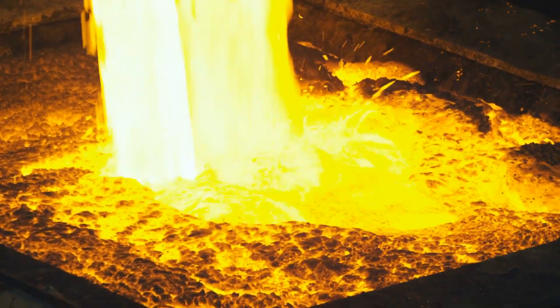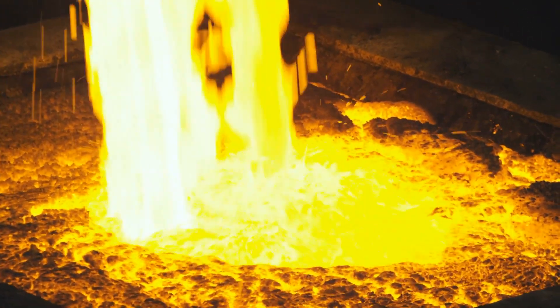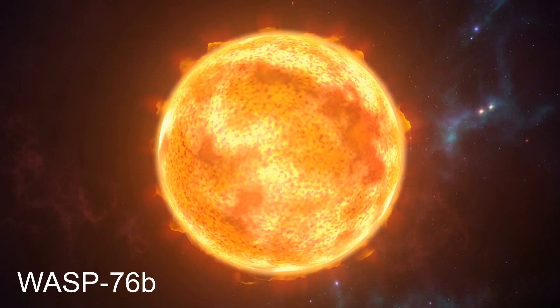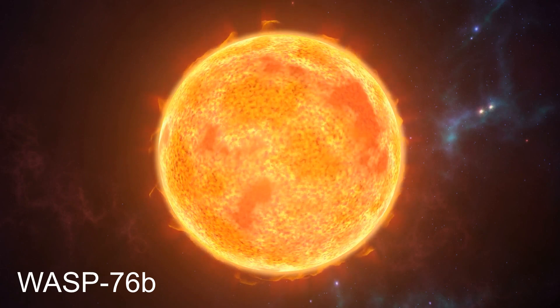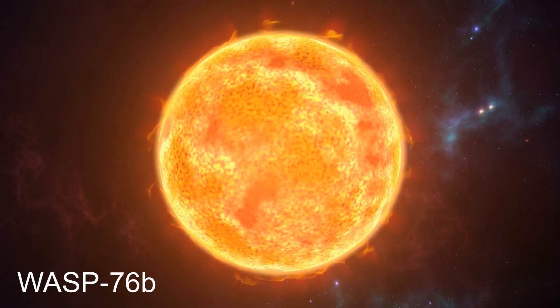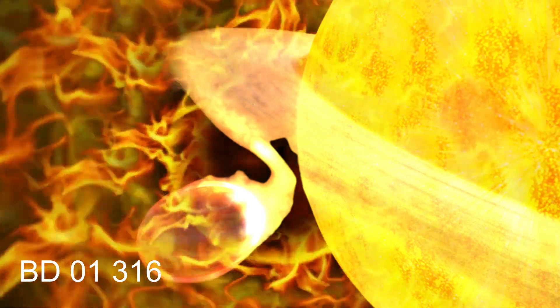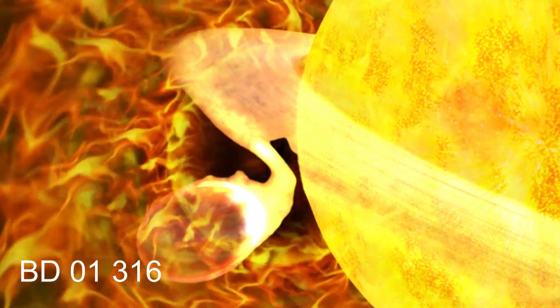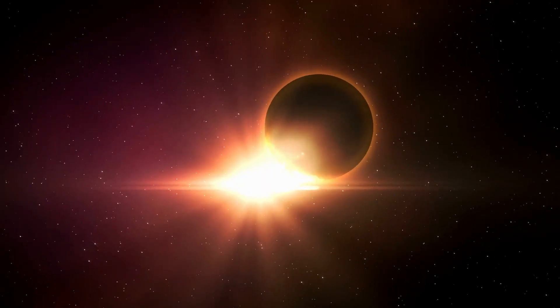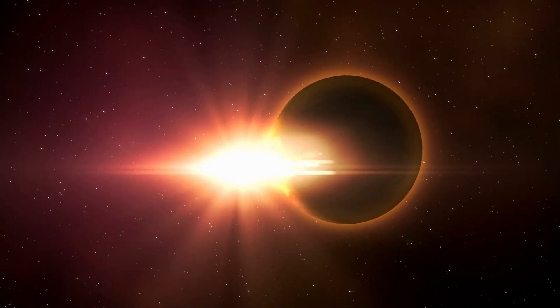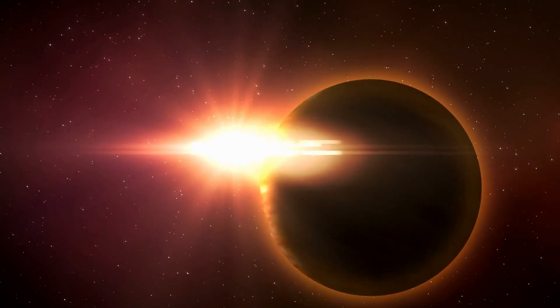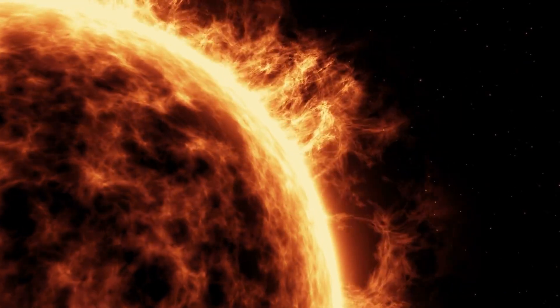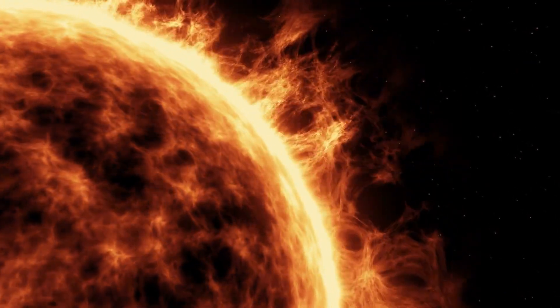There is an exoplanet out there that rains molten iron. You can only imagine how hot it would have to be to melt iron. WASP-76b was discovered in 2013, and it was further investigated by the ESPRESSO instrument on the Very Large Telescope in 2020. It was discovered that this planet is tidally locked to its parent star, BD-01-316. This simply means that one side of the planet is permanently facing the star, making it have temperatures of up to 4,532 degrees Fahrenheit. This is definitely hot enough to vaporize iron.